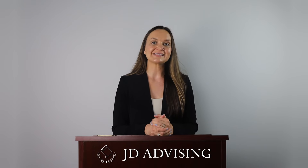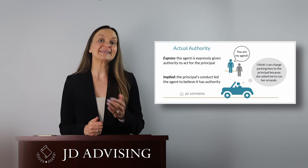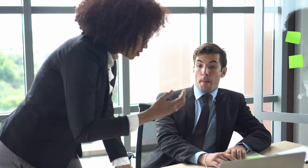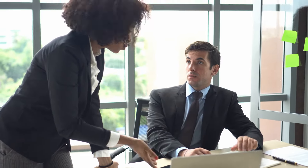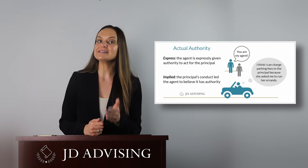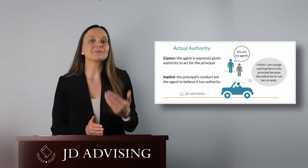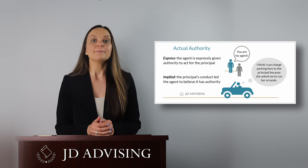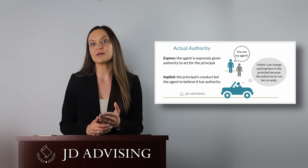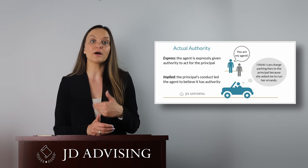If the agent had authority, then the principal becomes bound. So always start your essay with an actual authority analysis. Actual authority can be express or implied. Express actual authority is when the agent is given authority to act for the principal. Implied actual authority is present when the principal's conduct leads the agent to believe that they have authority — perhaps where there weren't explicit directions, but the agent was led to believe they had power by virtue of necessity, an emergency, or course of conduct.